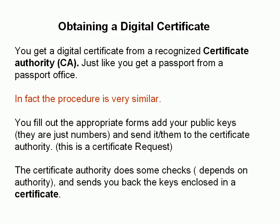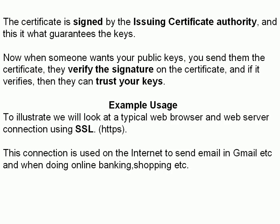Obtaining a digital certificate from a recognized Certificate Authority is the same process as getting a passport from a passport office. You fill out the appropriate forms, add your public keys, and send it to the Certificate Authority. The CA does some checks and then sends back the keys enclosed in a certificate signed by the Certificate Authority. When someone wants your public key, you send them the certificate. They verify the signature on the certificate, and if it verifies they can trust your keys. If it doesn't verify, they can't trust your keys and won't use them.